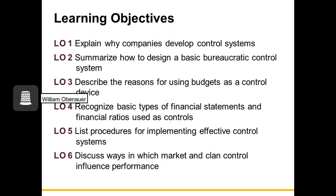As we move through this lesson, we're going to talk about why companies develop control systems and how to design a basic bureaucratic control system, describe the reasons for using budgets as a control device, talk about basic types of financial statements and financial ratios used as controls, go through procedures for implementing effective control systems, and finally talk about ways in which market and clan control can influence performance.